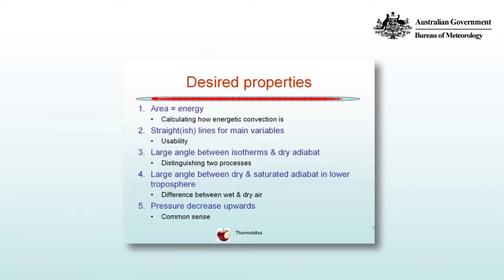We also want a large angle between dry and saturated adiabats in the lower troposphere. We'll define what a saturated adiabat is in a later lecture. So we need to be able to see very clearly the difference between wet and dry air. And we want pressure to decrease upwards, because that's common sense — that's exactly what it does.